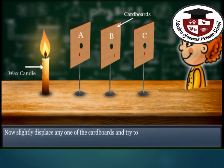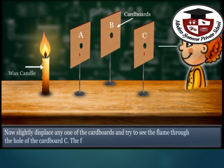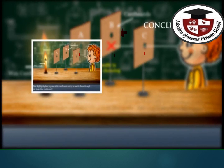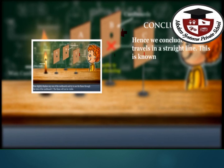Now, slightly displace any one of the cardboards and try to see the flame through the hole of the cardboard. The flame will not be visible, because you moved this cardboard. Then you cannot see the light of the candle. We conclude that light travels in a straight line.